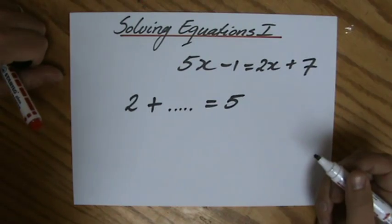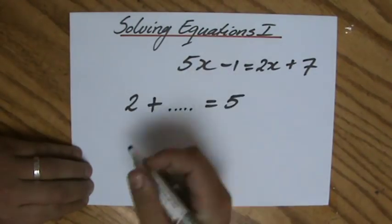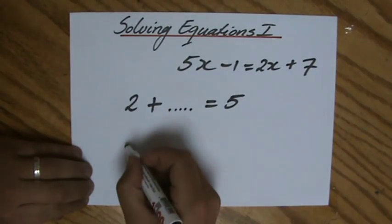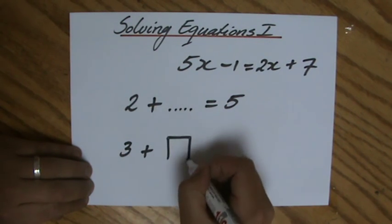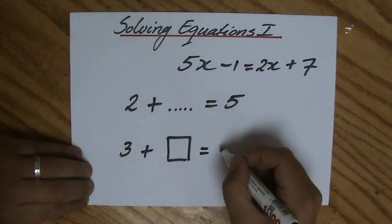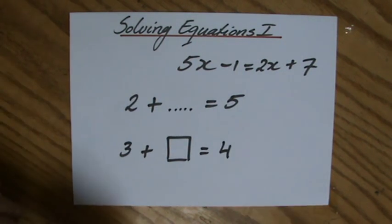Do you remember types of questions like that? Or maybe the workbook you had was like 3 plus, then you had just this little square, empty square equals 4. Remember those types of questions?